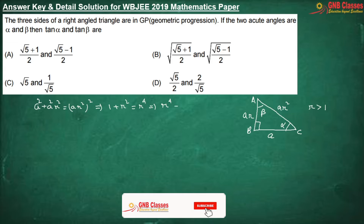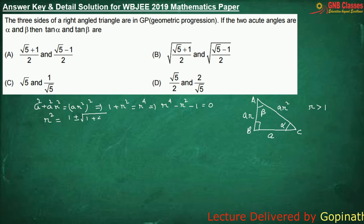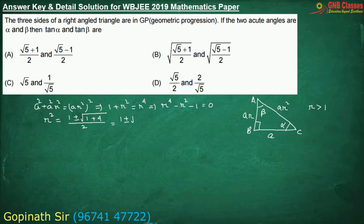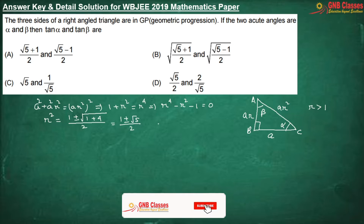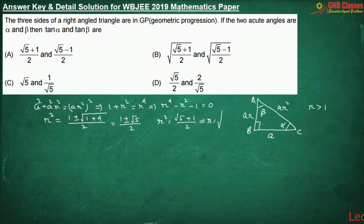That implies r to the power 4 minus r squared minus 1 equals 0. Now if I solve it by Sridharacharya's method, we get r squared as minus b plus-minus root over b squared minus 4ac divided by 2a, giving us (1 plus-minus root 5) by 2. Since r squared is positive, r squared equals (root 5 plus 1) by 2, rejecting the minus sign. Therefore r equals the square root of (root 5 plus 1) divided by 2.